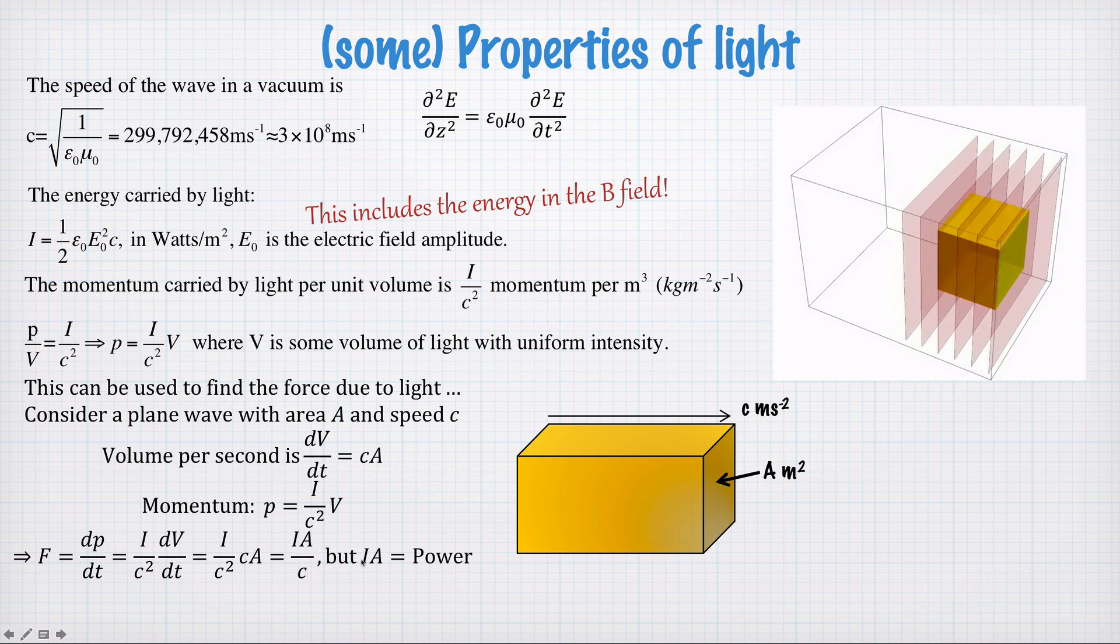But I, the intensity times the area, is the power, assuming the intensity is constant. And so the force, the radiation pressure force on something, is the power divided by the speed of light, where P is the power of the light in watts.